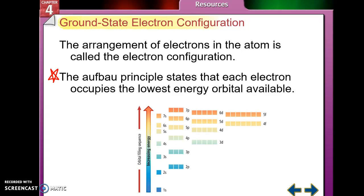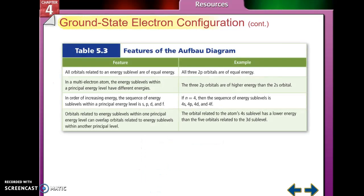To help us remember how to write electron configurations, we have what's called an Aufbau diagram. An important thing to remember is that when you have orbitals that are the same — like 2p orbitals — they're going to be of equal energy. The order goes s, p, d, f, because the p orbitals are of higher energy than the s orbitals. Also, the 4s sub-level has lower energy than 3d, so the filling order can go a little out of order.